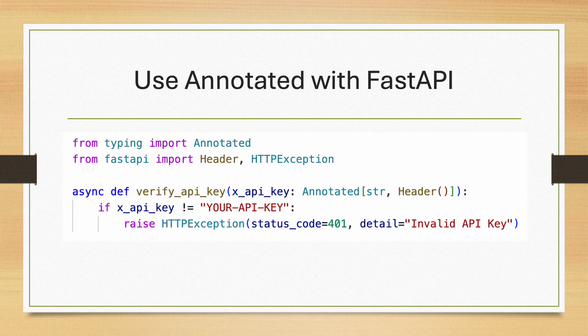Annotated is extensively used in FastAPI, the modern framework for building APIs in Python. Annotated is used to get path, query, header, and cookie parameters from the correct places. In this example, the x_api_key header will be automatically extracted and assigned to the corresponding argument, which is then used for validation.